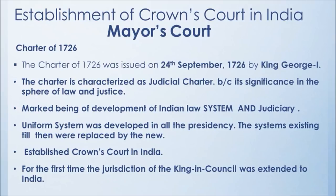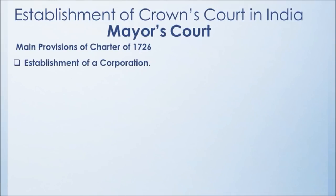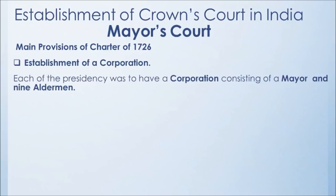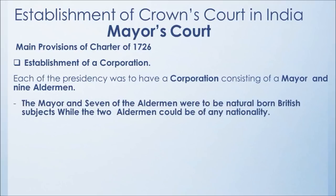Now we discuss the main provisions. The first important provision is the Establishment of Corporation. Each presidency was to have a corporation consisting of a Mayor and nine elder men. The Mayor and seven of the elder men were to be natural-born British subjects, while two elder men could be of any nationality. So Indians were largely ignored, making this a British-dominant corporation, as the majority were British-born subjects.